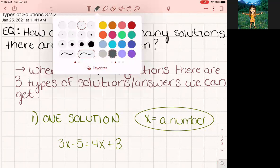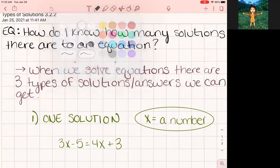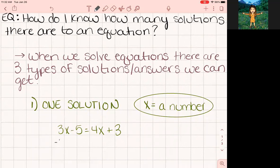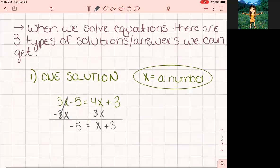Let's solve this example together. So if we were to solve this, maybe I subtract 3x from both sides so that that's gone. This was a negative 5. This becomes just x plus 3. Subtract 3 from both sides to get rid of any addition and subtraction.